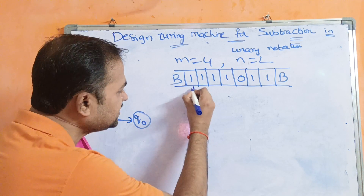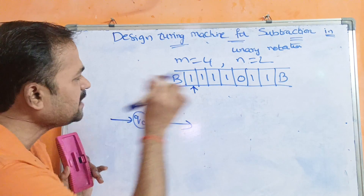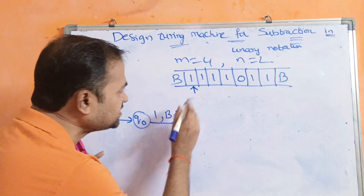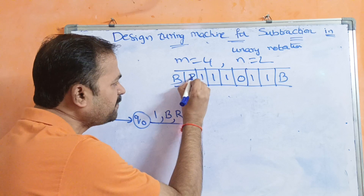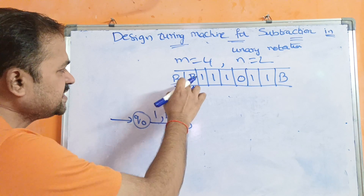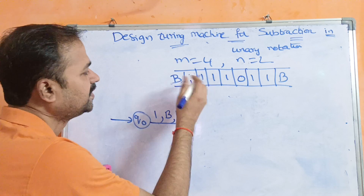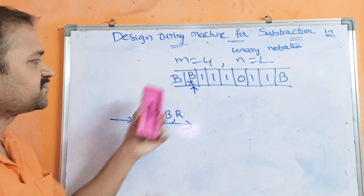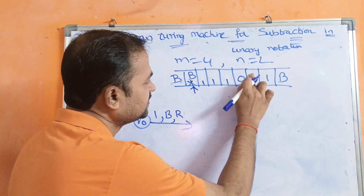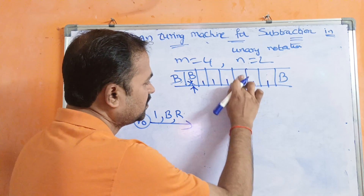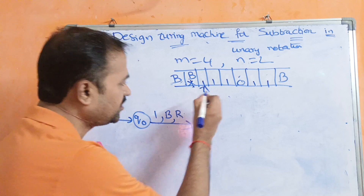Initially the read/write head is at the first one. On state q0, if we read a one, replace it with the blank symbol B and move the head to the right. On state q1, if we read a one or zero, do not change it but move the head to the right.